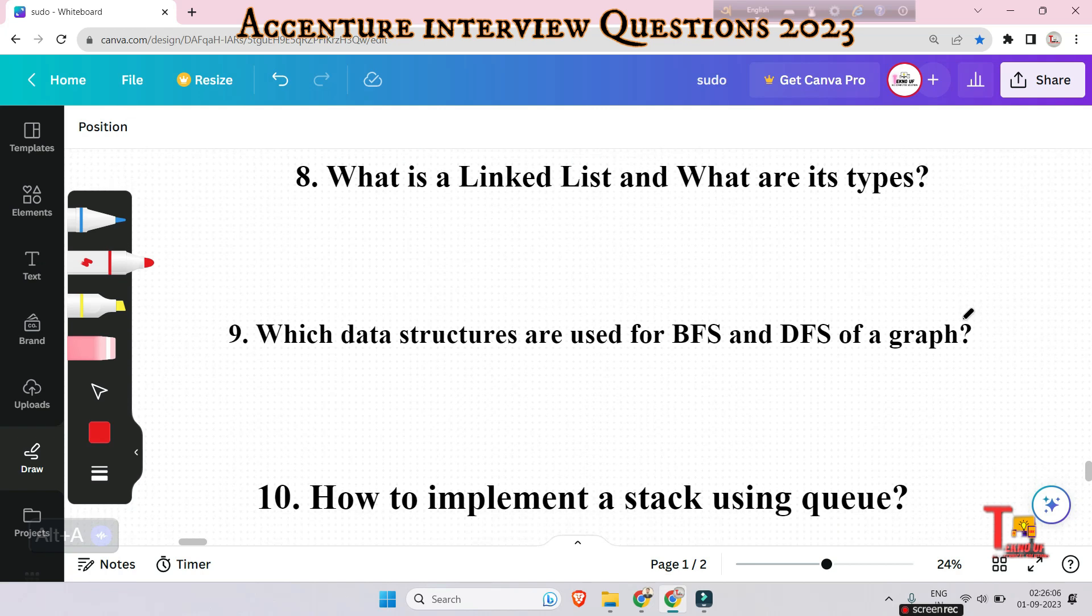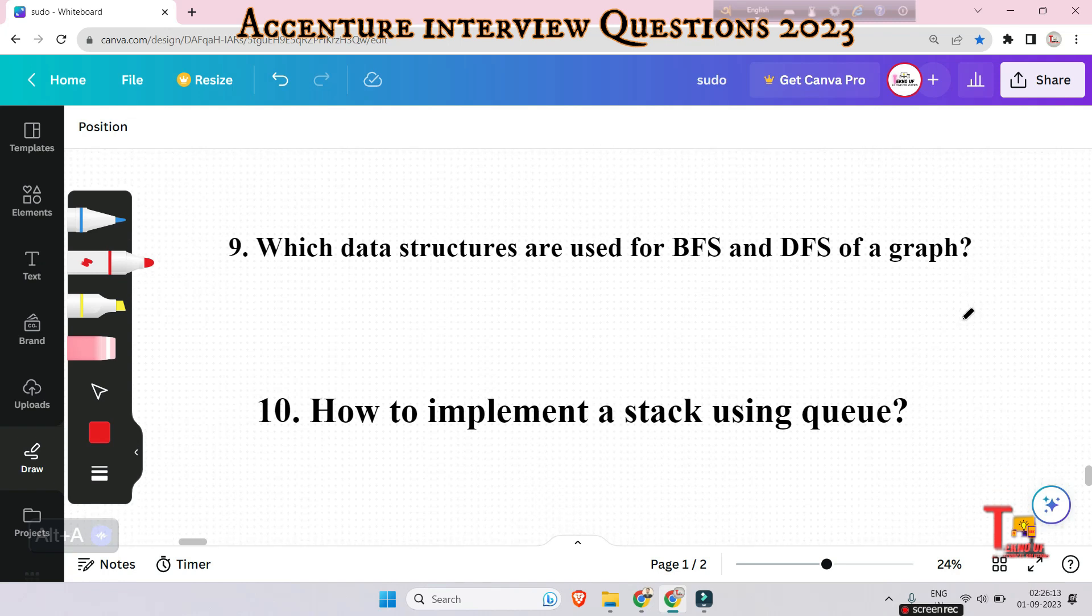Which data structures are used for BFS and DFS of a graph? Queue is used for BFS (Breadth First Search), and DFS (Depth First Search) can be implemented using recursion.